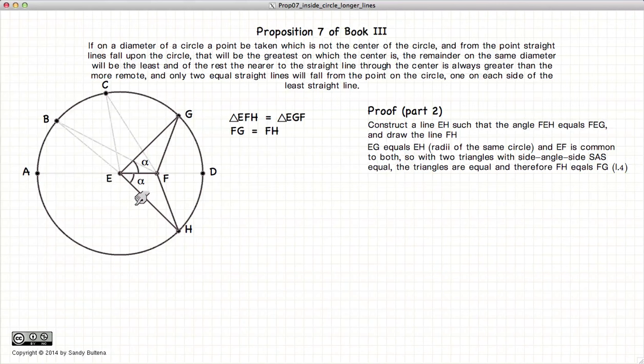According to proposition 4, these triangles are identical or equivalent, excuse me. And if they are equivalent, then FG is equal to FH. So we have found one line FH that is equal to FG.